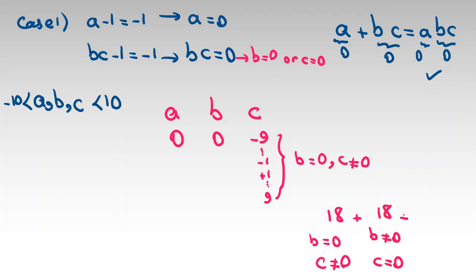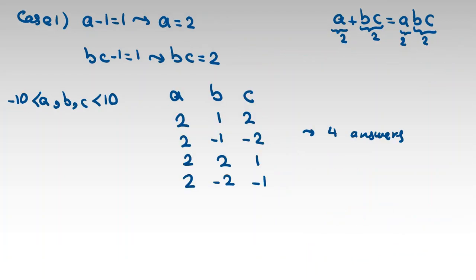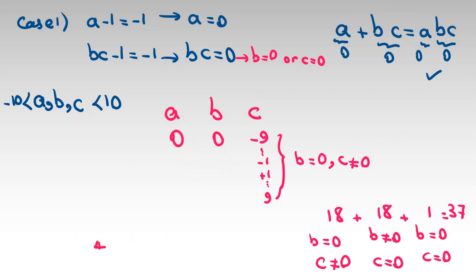And the case that b is zero and c is zero, we have one answer: 36 plus 1 equals 37. In the previous case we had four answers.